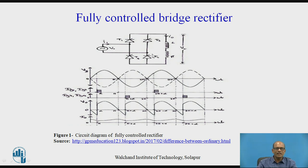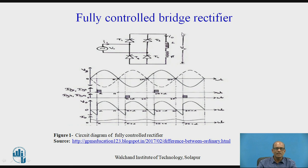This is the circuit diagram for the Fully-Controlled Bridge Rectifier. Input is fed as shown in the circuit. T1, T2, T3, and T4 are the 4 SCRs. The cathodes of the upper two SCRs act as the positive of the load voltage, and the anodes of the lower two SCRs as the negative. RL load is connected as shown in the circuit, and this is the output voltage V0.